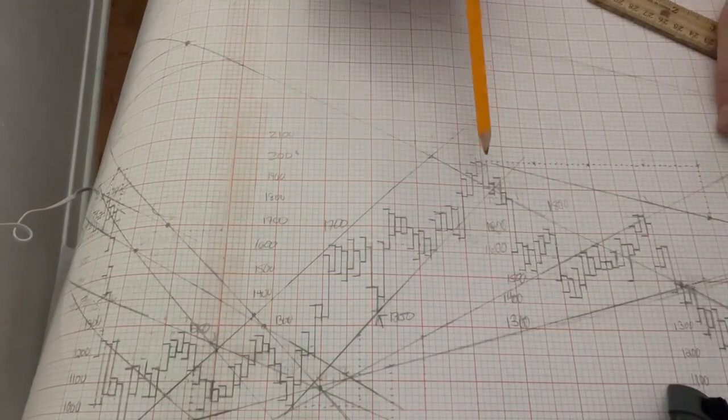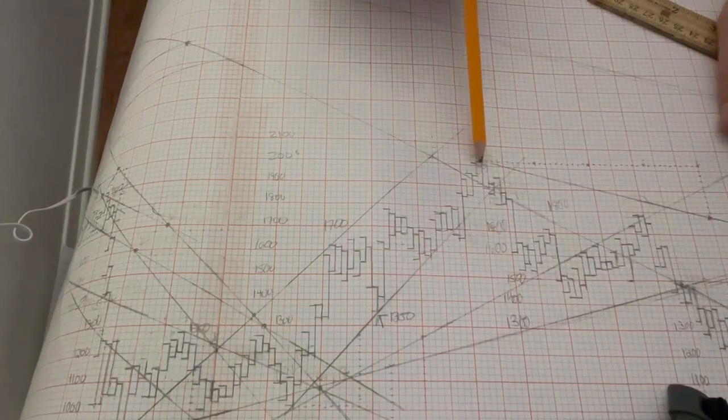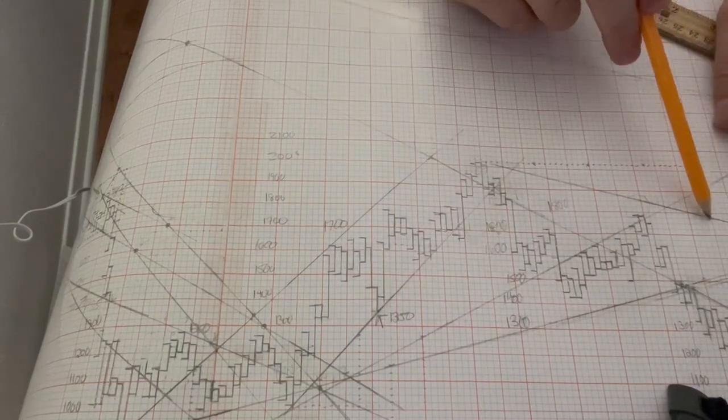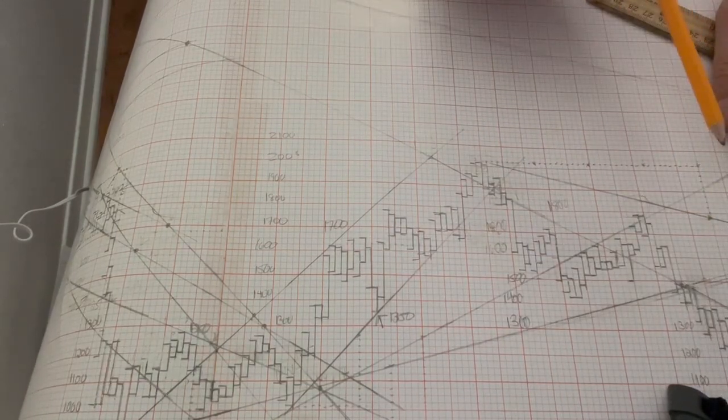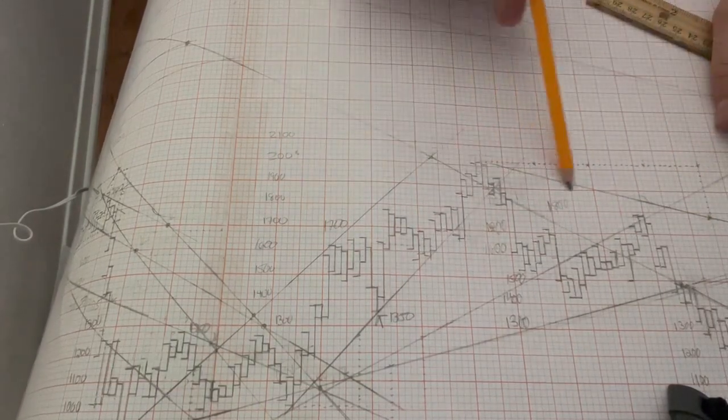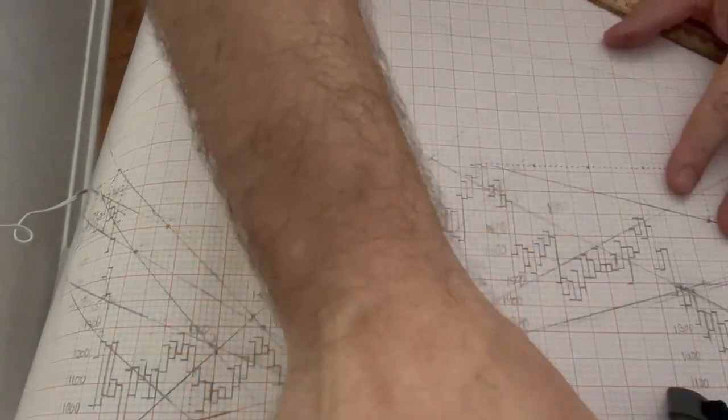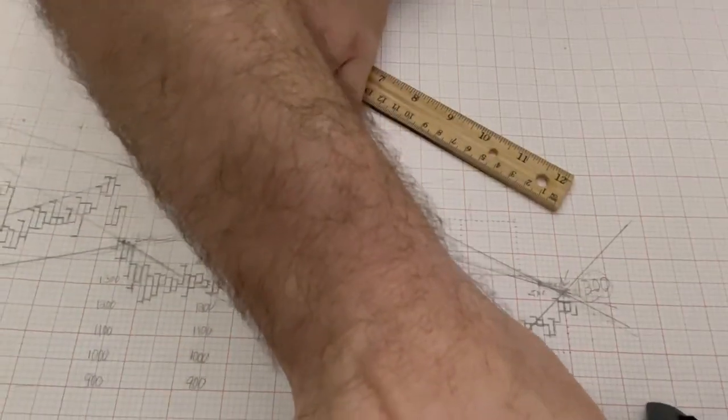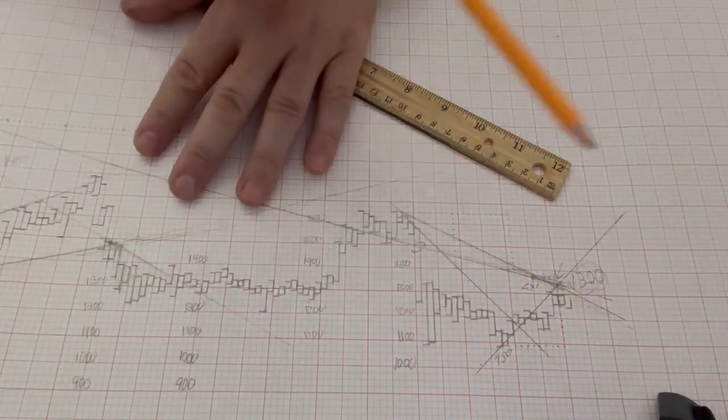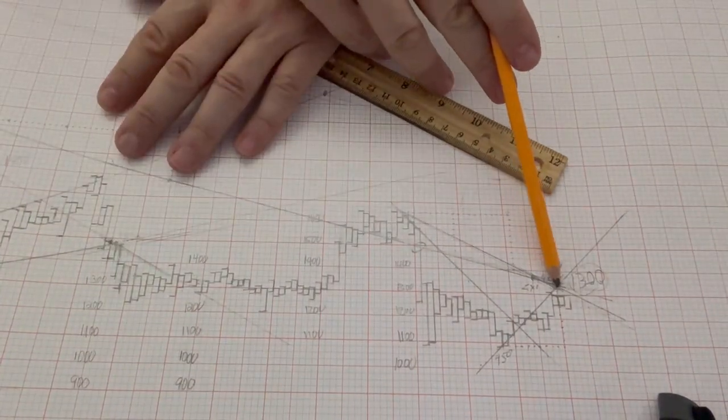And then I connect right here, the high at 2000 with the bottom of the four by one line, and I draw it all the way out. And you're like, well Bill, where does the line go? Well, it goes to where Ethereum is right now. It goes to 1300.